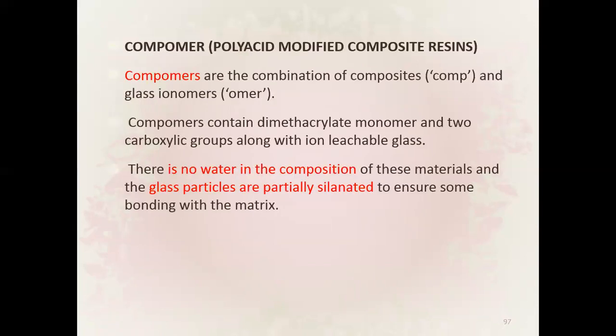Next we have compomer, that is poly acid modified composite resin. Compomers are the combination of composites and glass ionomer. They contain dimethacrylate monomer and two carboxylic groups along with ion-leachable glass. There is no water in the composition of these materials, and the glass particles are partially silanated to ensure some bonding with the matrix.